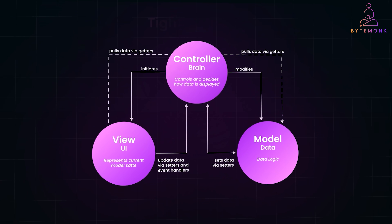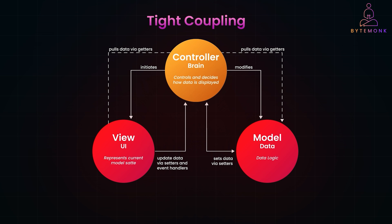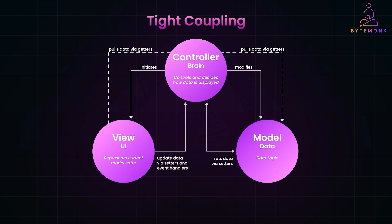Finally, let's talk about tight coupling. Tight coupling in your MVC implementation means your components are so dependent on each other that changing one breaks everything else — a nightmare for maintenance and scalability. To fix this, keep your components loosely connected. Use interfaces, dependency injection, or event-based communication to ensure that each part of your MVC setup can evolve independently. Remember, independence makes scaling easier.